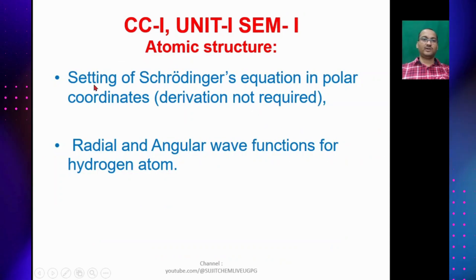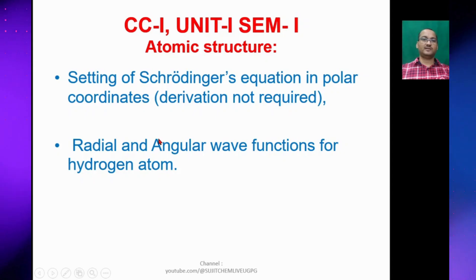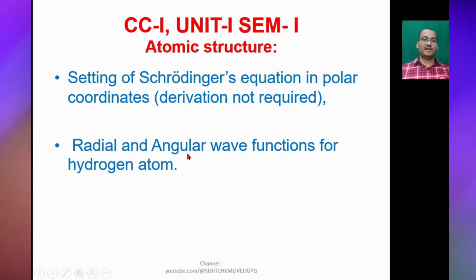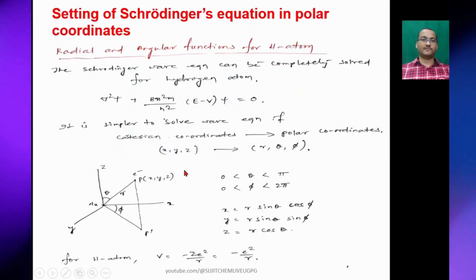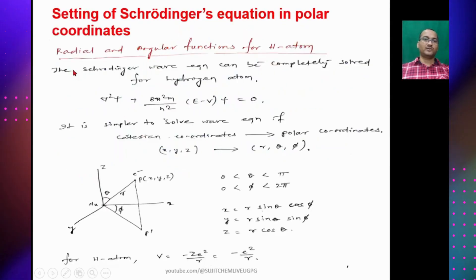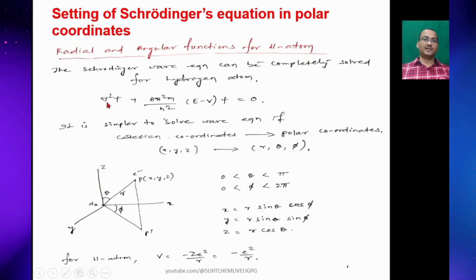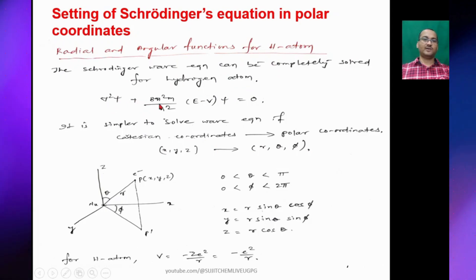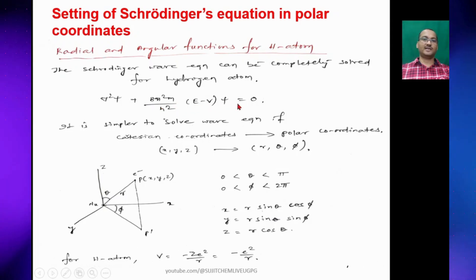Today we are going to talk about the setting of the Schrödinger wave equation in polar coordinates and radial and angular wave functions for the hydrogen atom. The Schrödinger wave equation can be completely solved for the hydrogen atom. The equation is: del-squared ψ plus (8π²m / h²)(E minus V)ψ equals zero.